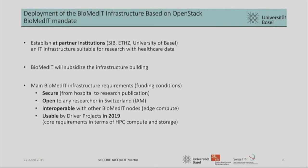Let's have a look at what the mandate is for BiomedIT. We have to establish a partner institution — in collaboration with SIB, ETH, and the University of Basel — and make infrastructure suitable for research with healthcare data. BiomedIT will subsidize the infrastructure building, so we will receive a certain amount of money to set up our infrastructure. We have to fulfill certain requirements to get the funding: we have to provide a secure environment, it has to be open to any researcher in Switzerland, and it has to be interoperable with other BiomedIT nodes.